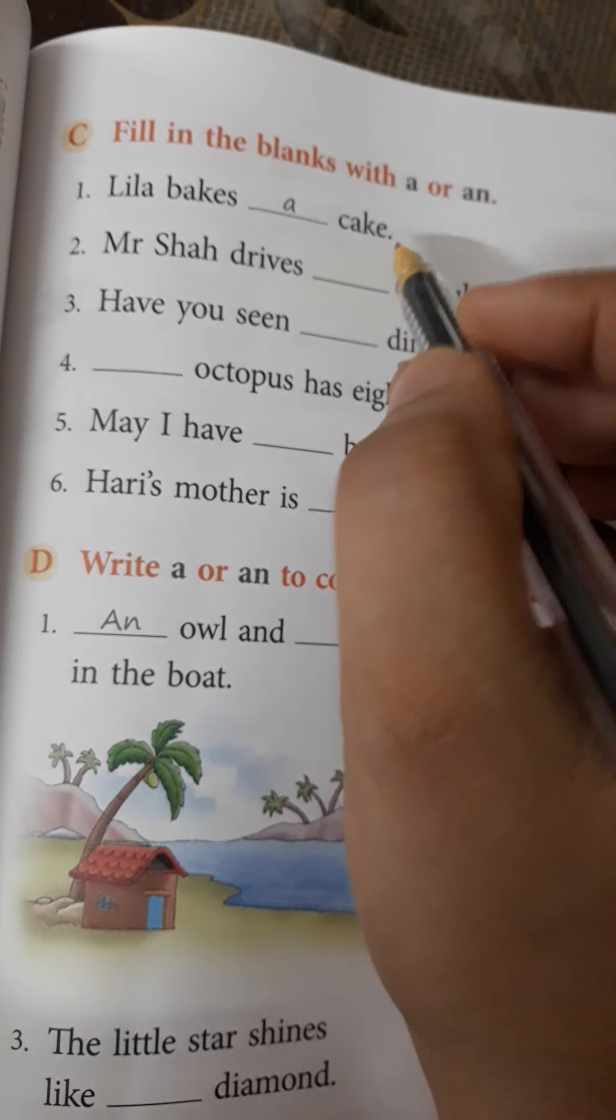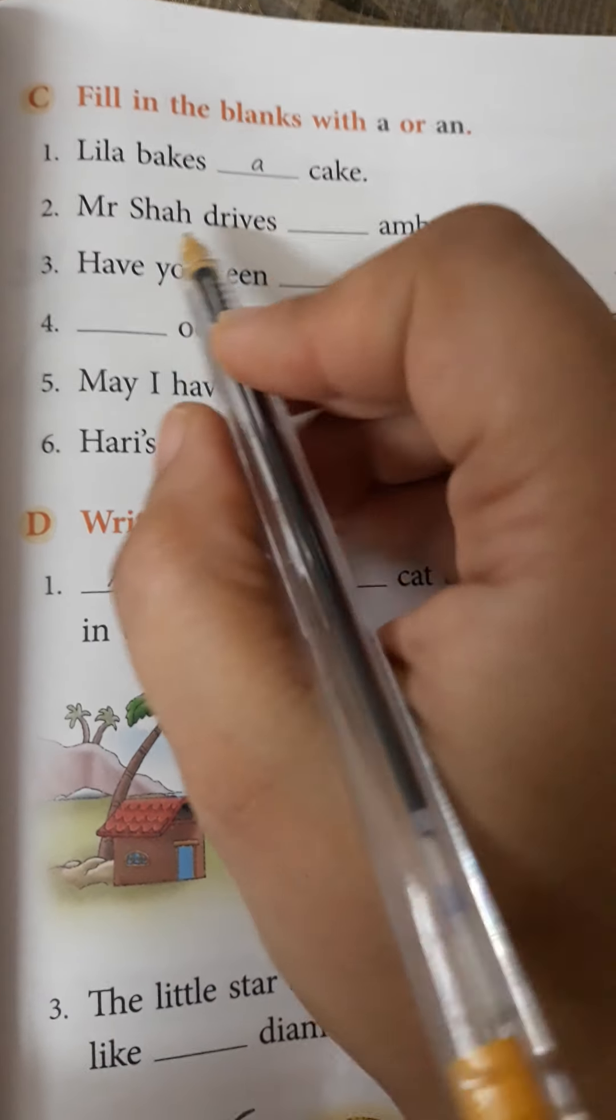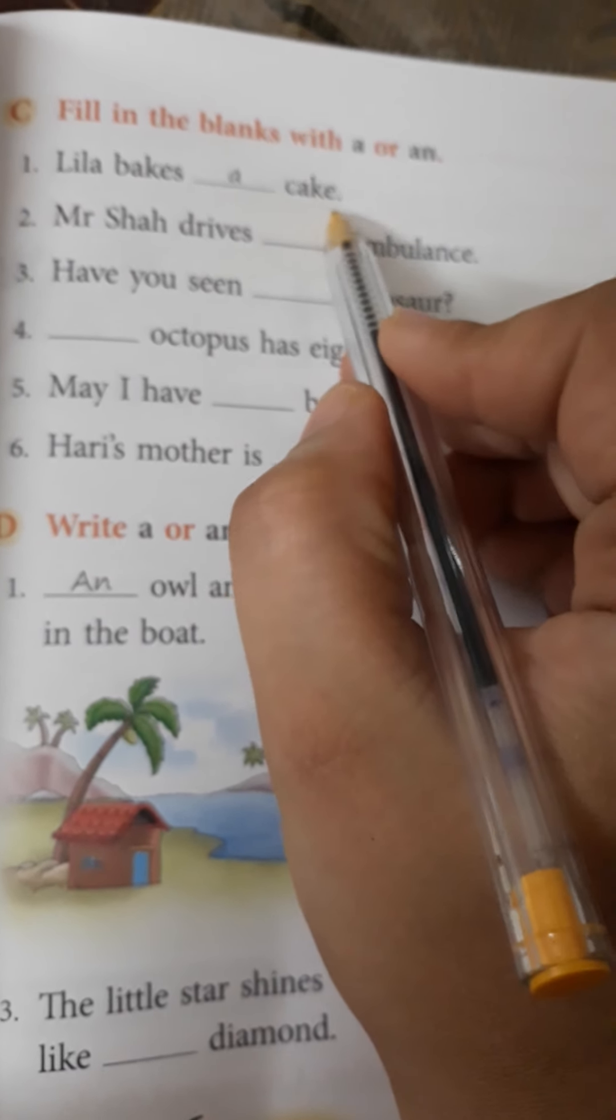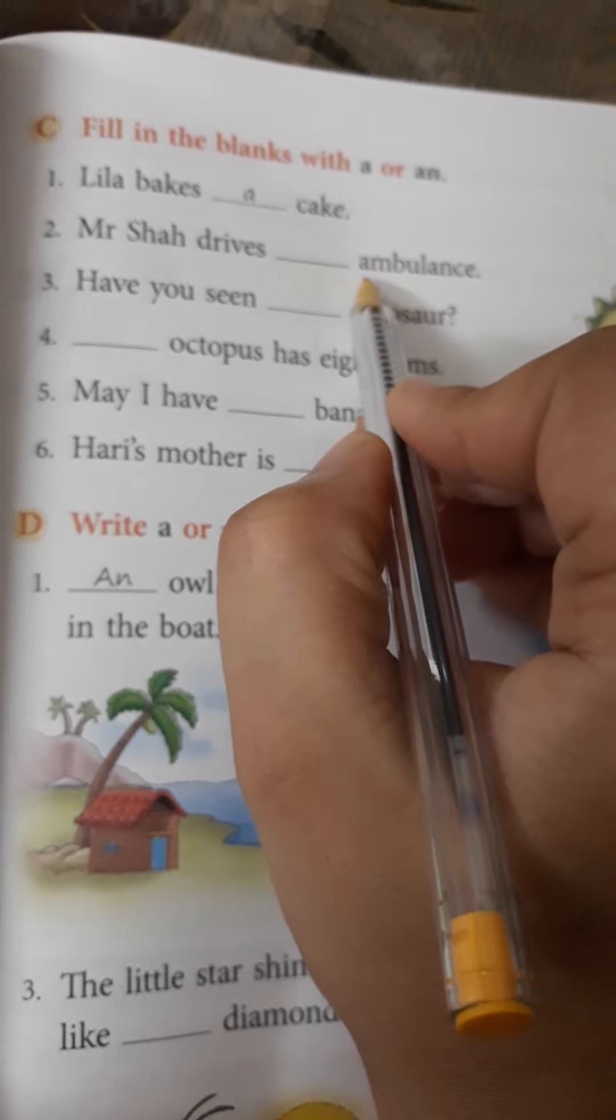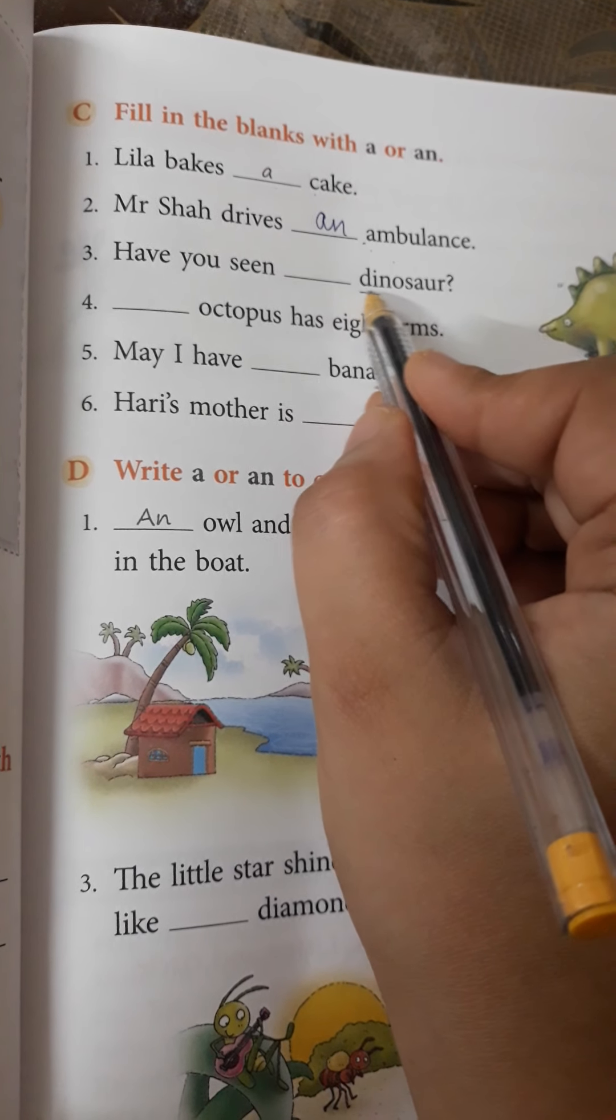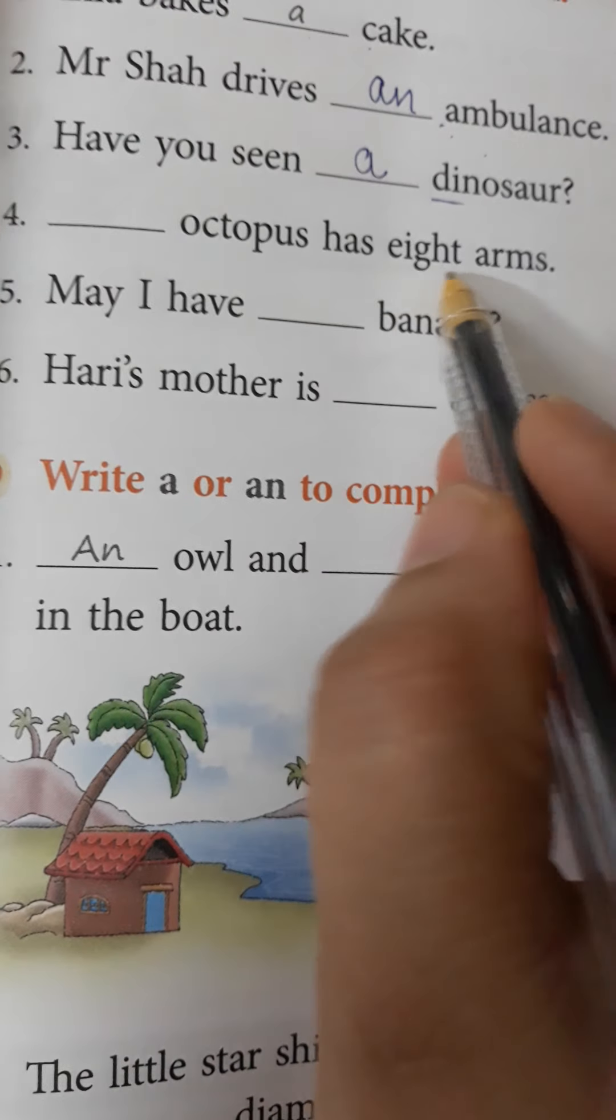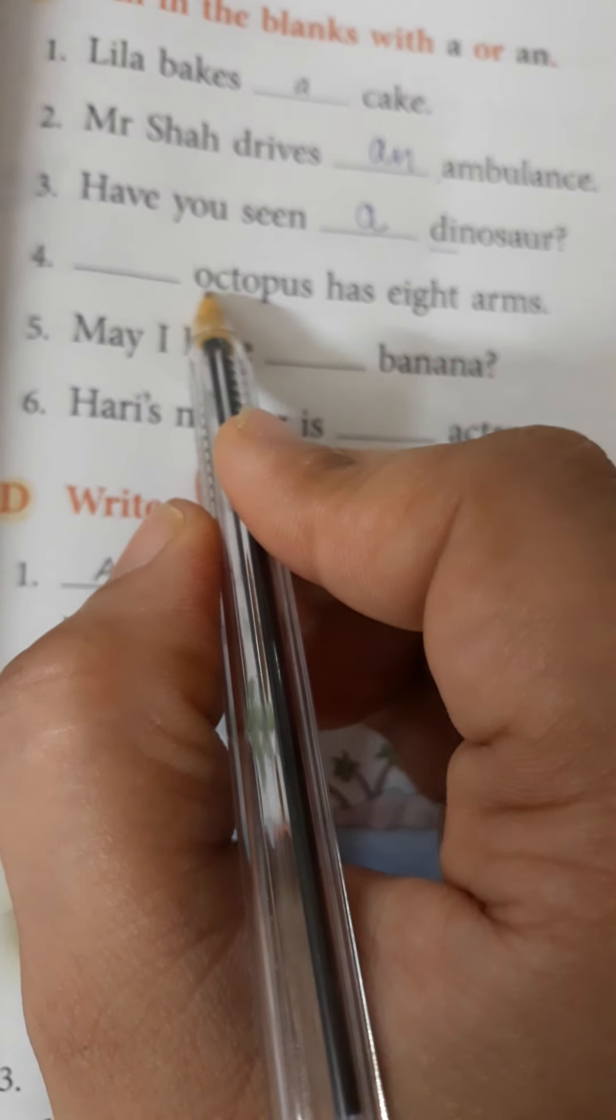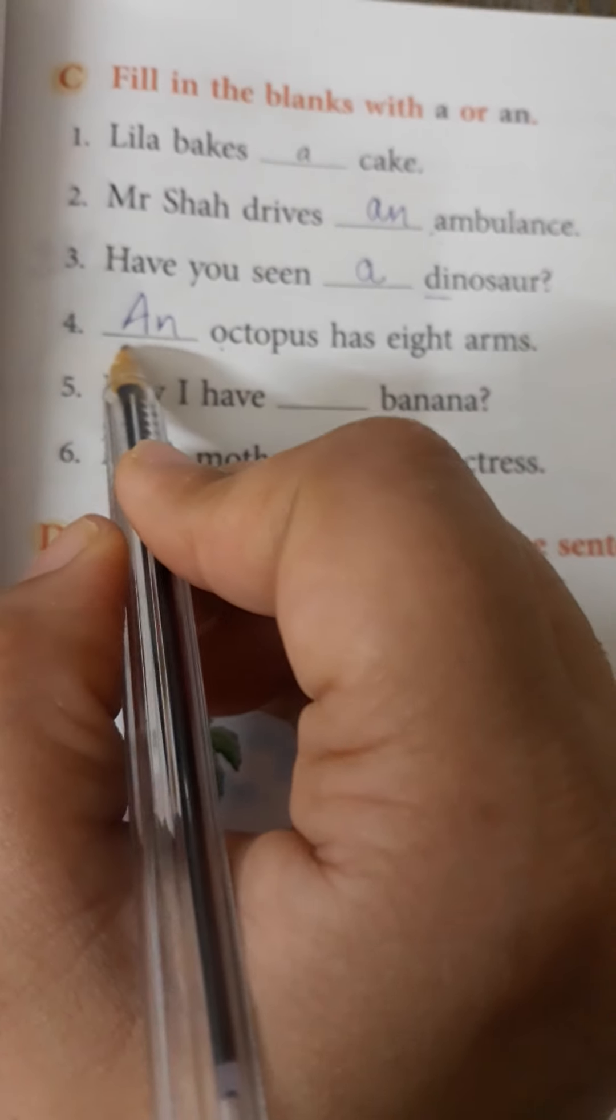It is so simple. If the noun is singular and it starts with vowel, we write AN. If it starts with a consonant, we write A. Now, let's read the sentences. Number 1. Leela bakes dash cake. Starts with C. Is a consonant. So, A. Mr. Shah drives dash ambulance. It starts with A. So, what are we going to write here? A is a vowel. So, here we will write AN. Have you seen dash dinosaur? You simply have to look at the first letter and the sound of that word. Dinosaur. D. So, consonant. So, we will write A. Dash octopus has eight arms. O. O is a vowel. A-E-I-O-U. Yes. It is a vowel. So, here we are going to write AN. Now, why have I put A capital here? Because this is the first word. This is the first letter of the sentence. That's why A will come in capitals here.